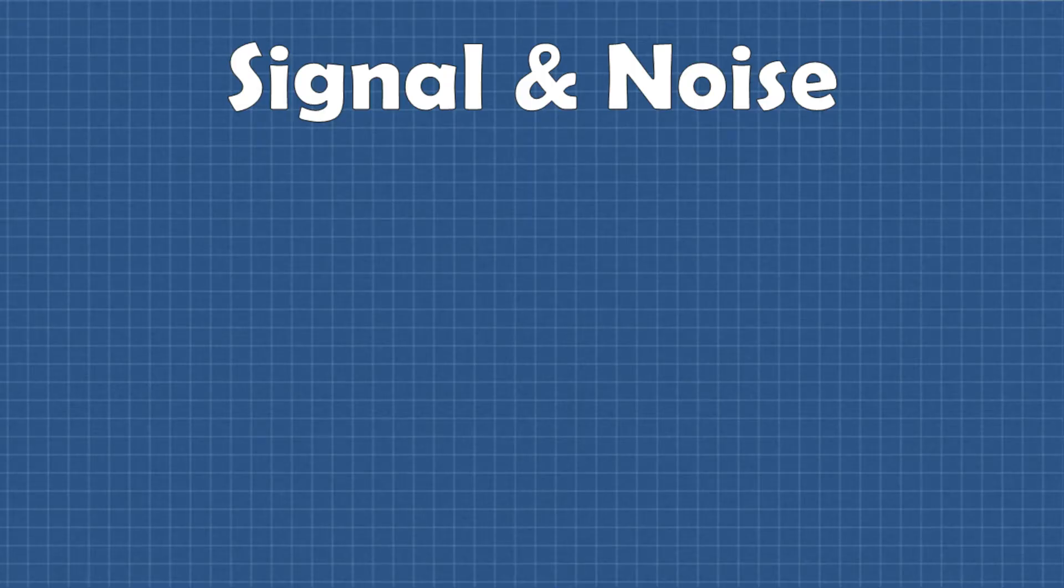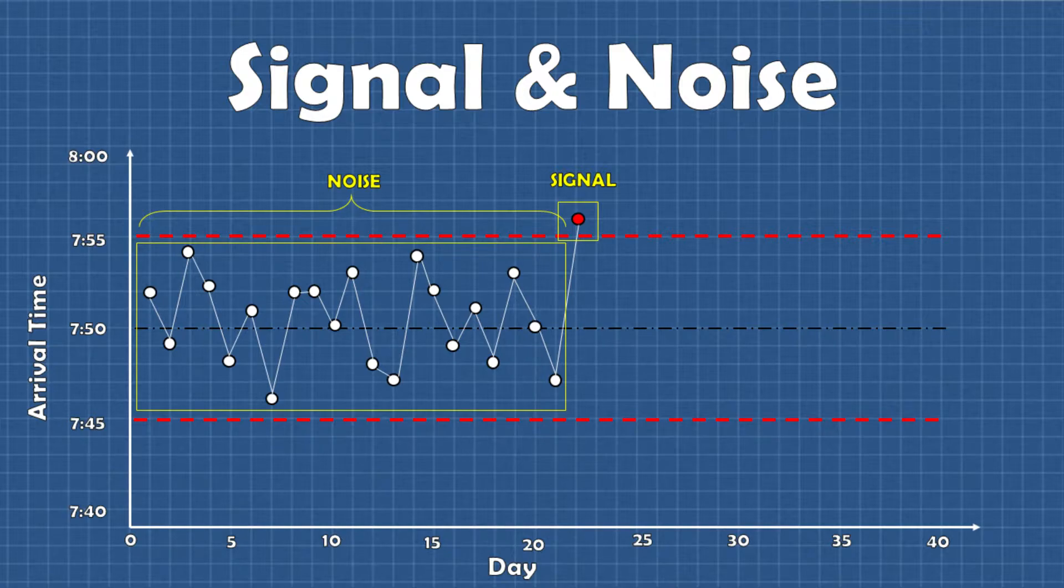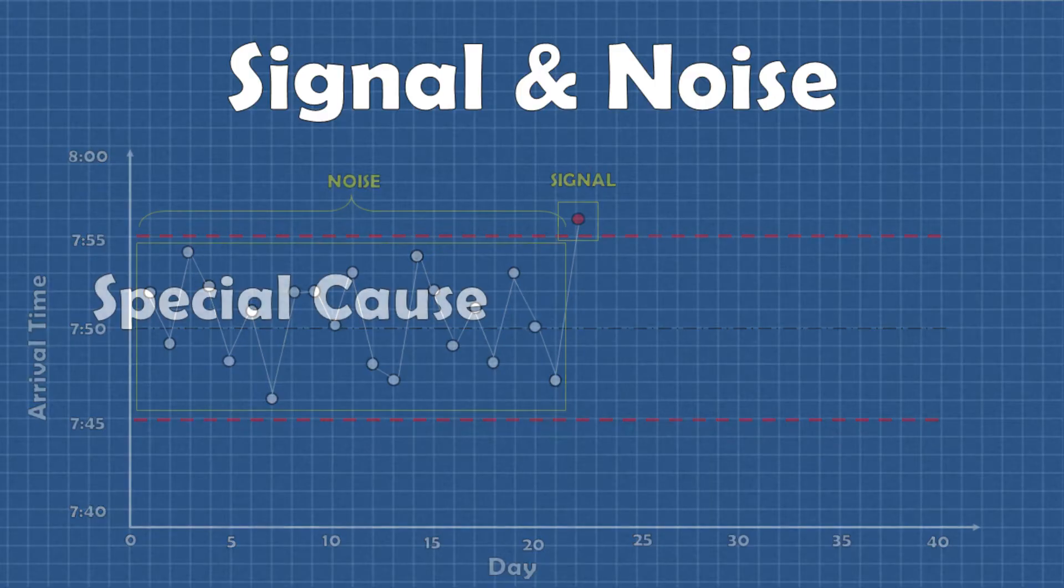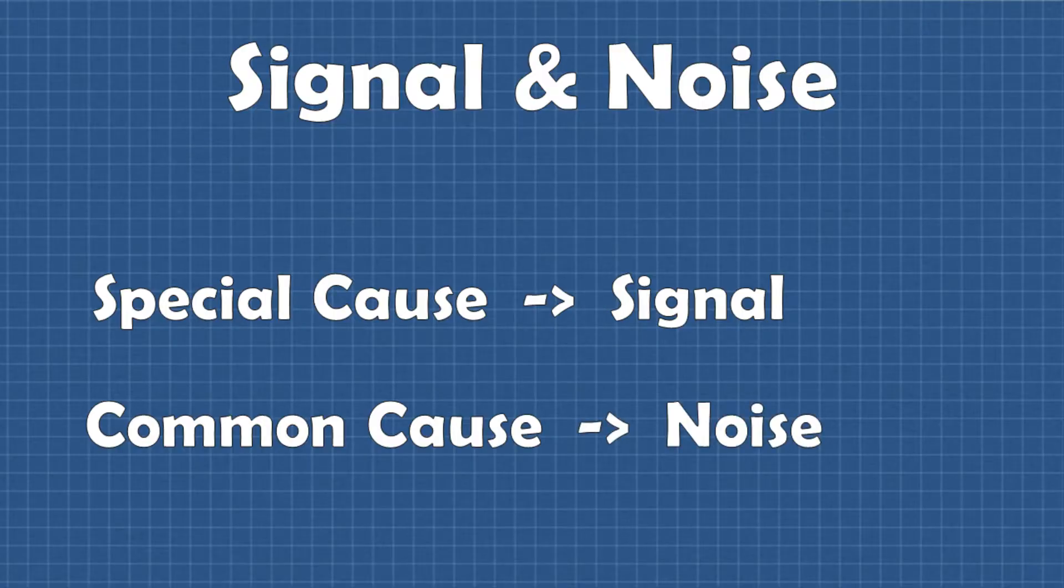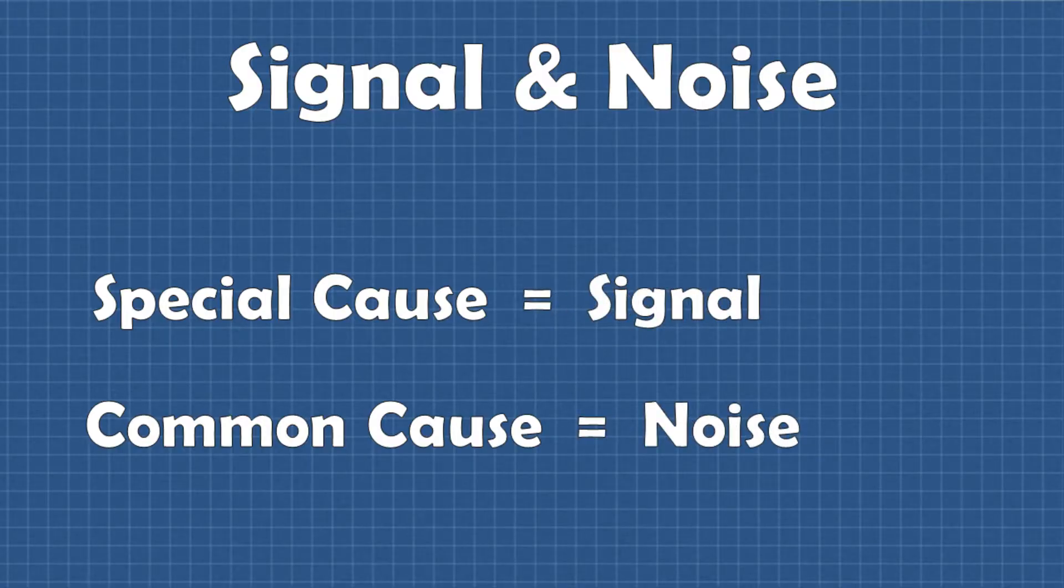Another concept that comes up when dealing with statistics and control charting is the idea of signal and noise. Signal and noise are really just terms for how we categorize the data on the chart where signals are points that are outside the control limits and noise are points that are inside the control limits. So basically special cause variation is what leads to a signal and common cause variation is what just creates noise and you may also see these terms used interchangeably.